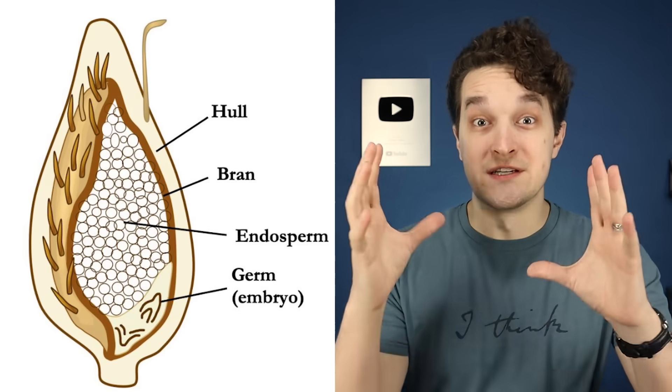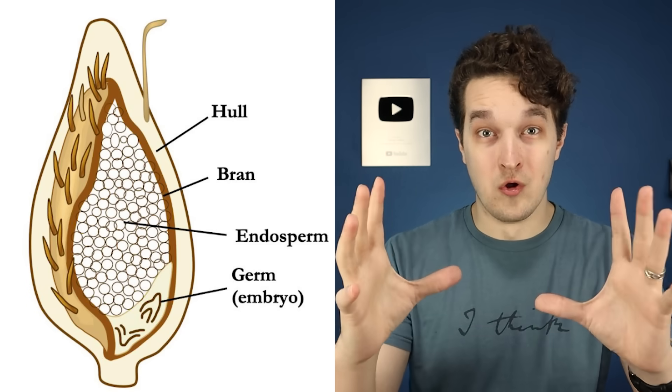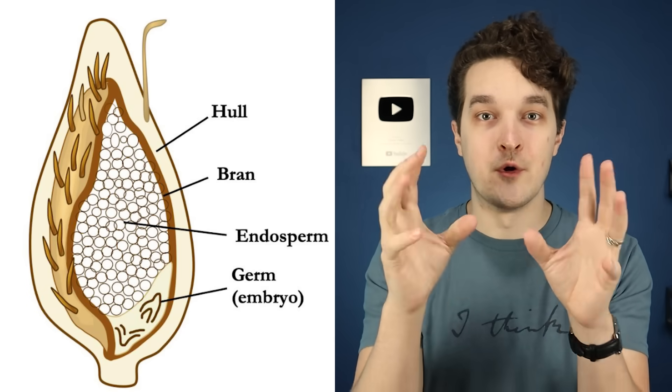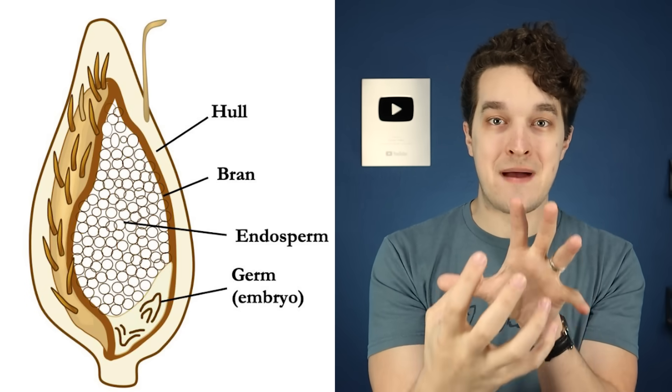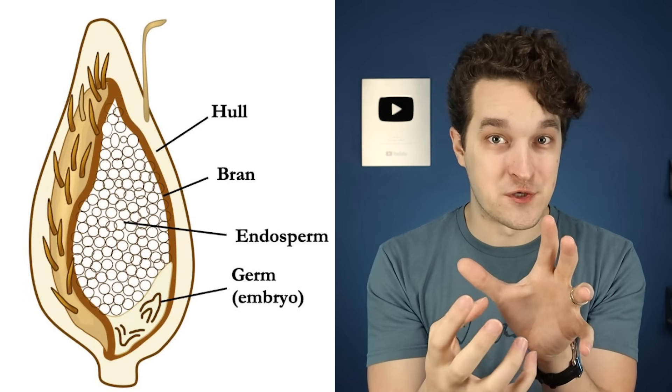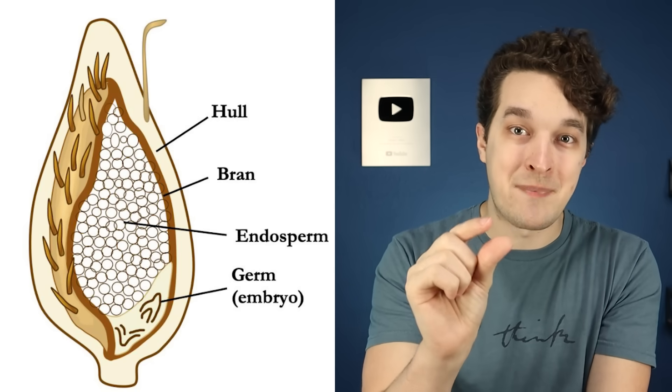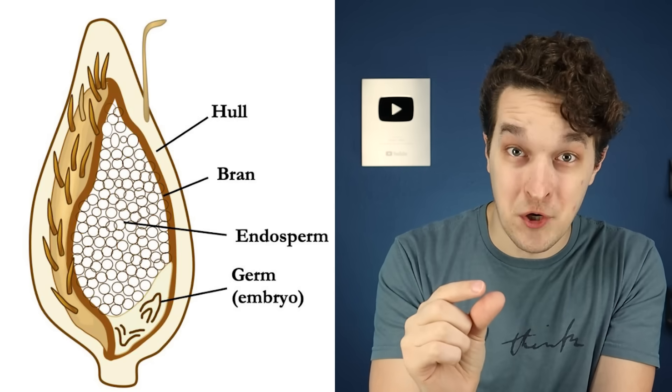The anatomy of a grain is pretty straightforward. It's a tough outer hull which encloses a thick layer of what's called bran, which houses a mass of endosperm and an embryo-containing packet called a germ. During the milling process, the hull, bran, and germ are removed, leaving the endosperm.